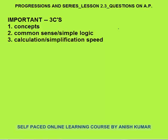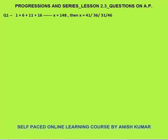Let's discuss questions. First question: 1 plus 6 plus 11 plus 16 up to x. We don't know which term x is. Total sum is given as 148. I will assume that x is the nth term. The sum is given as 148 and we need to find the value of x. We know that sum of first n terms is equal to n by 2 times first term plus last term.